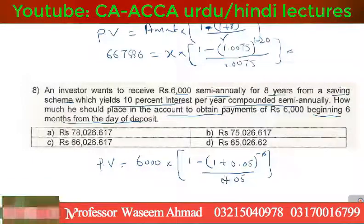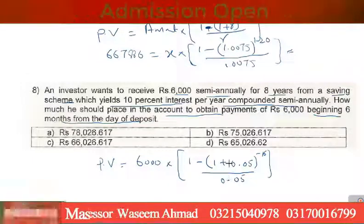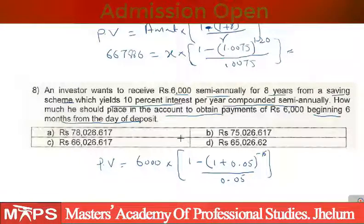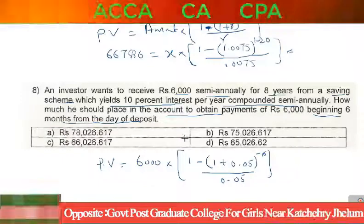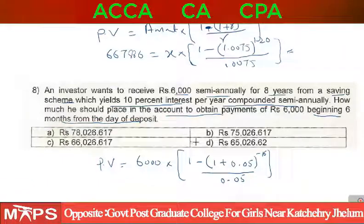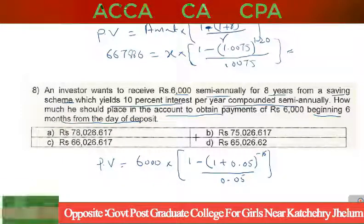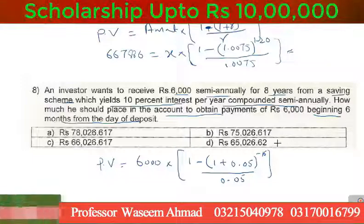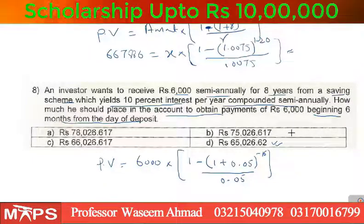The denominator is 0.05. When you solve this, the answer comes out to $65,026.62, which is option D.